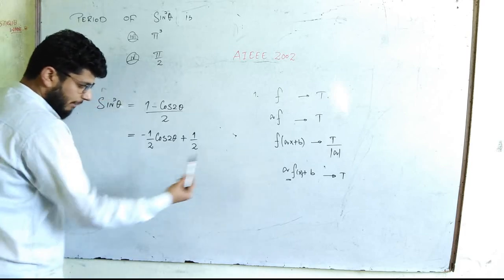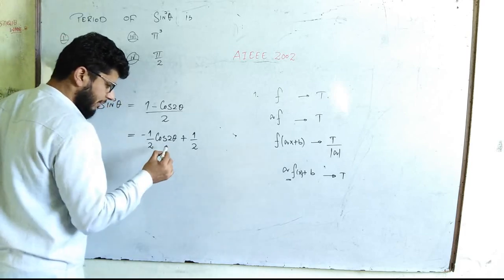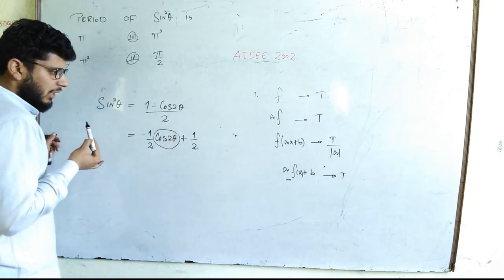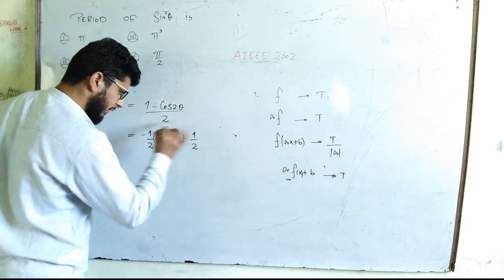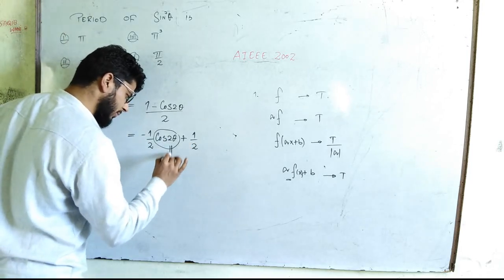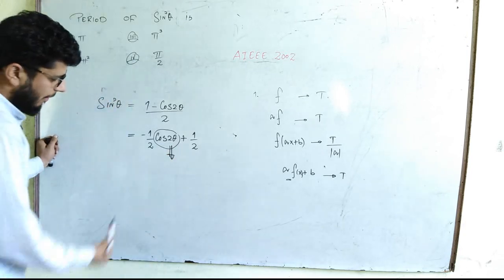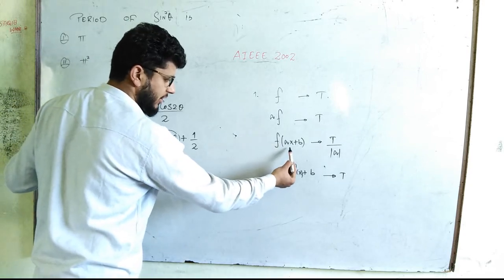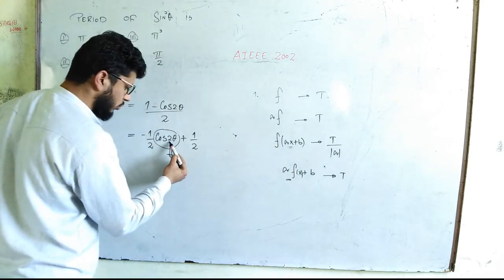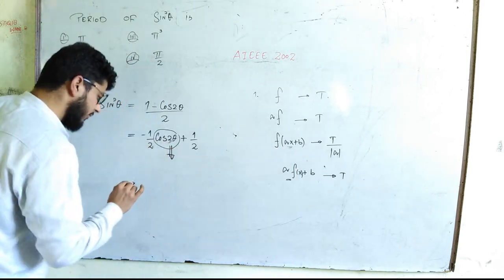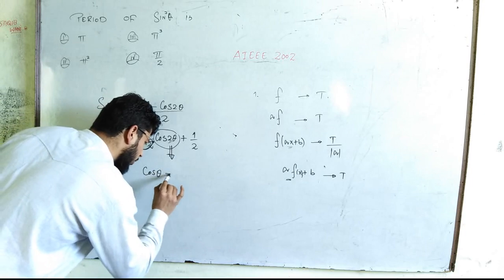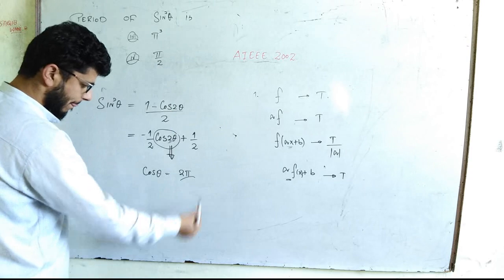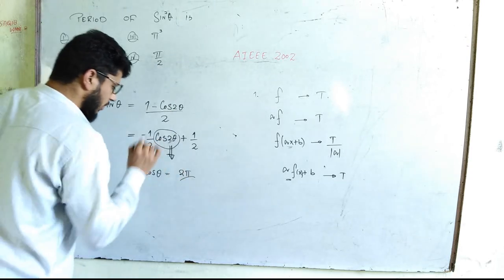If we have our function f of theta, then the period of this will be equal to the period of this one. But it is f of 2 theta, that means here it's 2 theta. So the period of cosine of theta you know that is 2 pi, that means the cosine function repeats itself after every 2 pi.